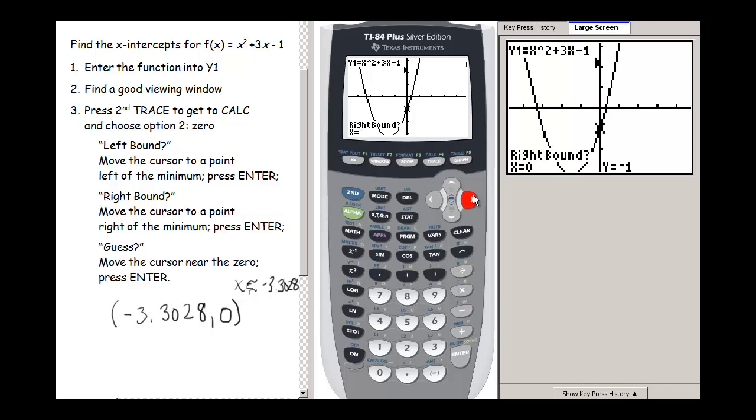Then it asks me for a right bound, so I'm going to move to the right. I'm to the right of it now, and I press ENTER. Then it asks me for a guess. I can either press ENTER right away or move closer to it and press ENTER.